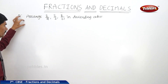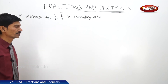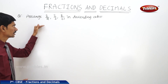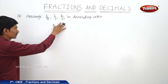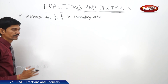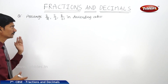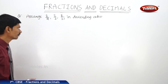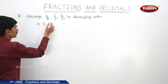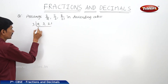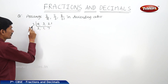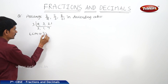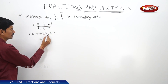Next question: arrange 2/9, 2/3, 8/21 in descending order. To compare fractions, they must be like fractions with equal denominators. The denominators 9, 3, and 21 are not equal, so we find the LCM. Factoring: 9=3×3, 3=3, 21=3×7. The LCM equals 3×3×7=63.